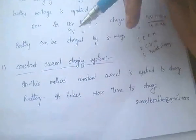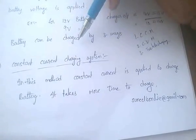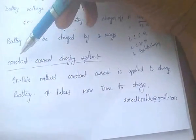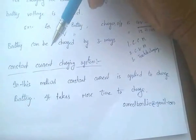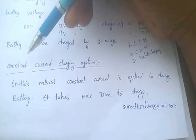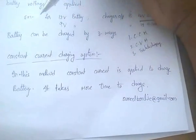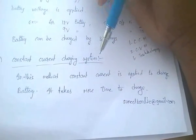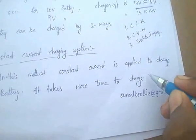In the constant current charging method, as the name itself says, a constant current is applied to charge the battery. This method takes more time to charge the battery.